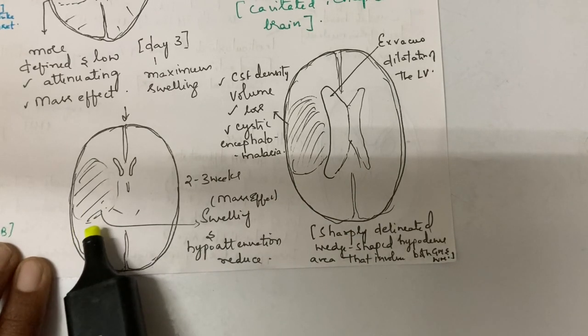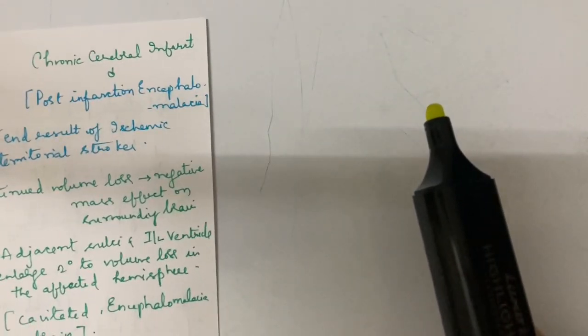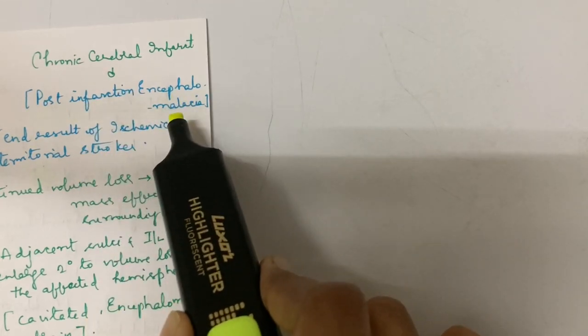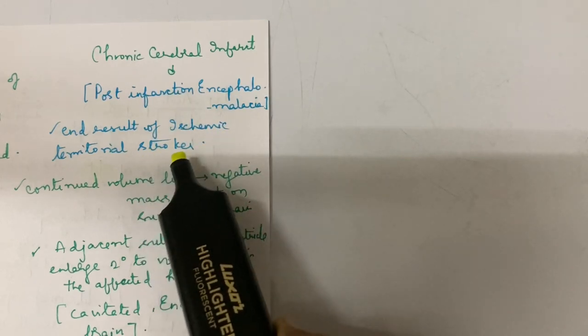This is about subacute infarct. Coming to chronic infarct: here we see post-infarct encephalomalacia changes. It's the end result of ischemic territorial strokes.